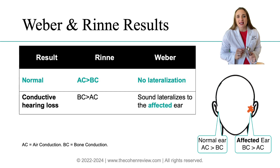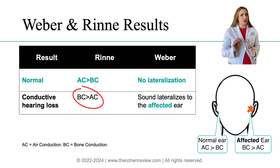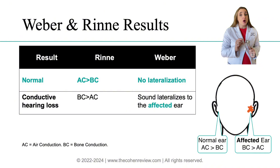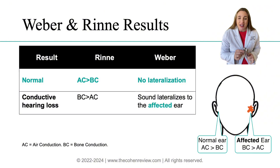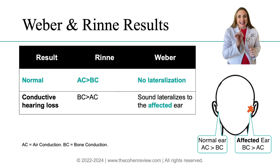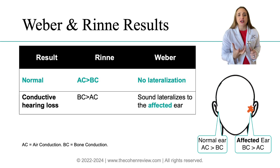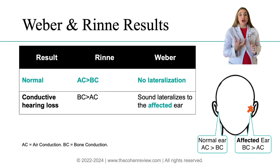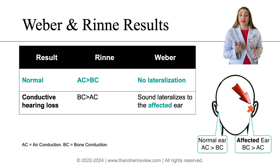If the Rinne test shows bone conduction is greater than air conduction, then we know there is conductive hearing loss in that ear. The air sound has been blocked by something, and whatever it is, it will vibrate intensely when we perform the Weber test, amplifying the vibrations — that's why the Weber test will show lateralization to the affected ear.